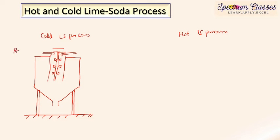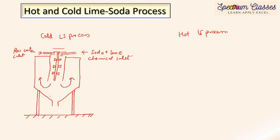In the cold lime soda process, raw water enters through the inlet and is mixed with soda-lime chemicals using a mechanical stirrer in the reaction chamber. The treated water flows upward, and sludge — consisting of suspended calcium carbonate and magnesium hydroxide particles — forms. These insoluble particles settle out and are referred to as sludge.